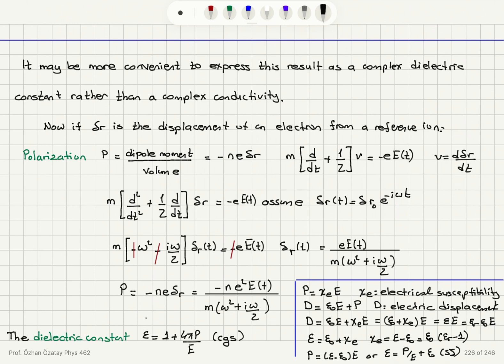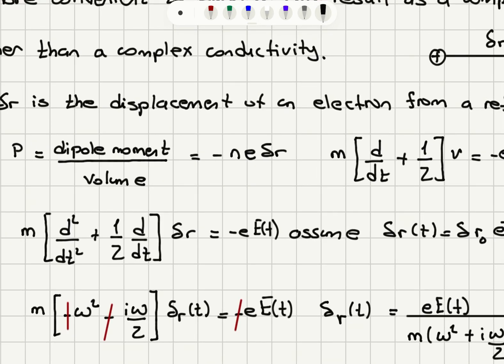Instead of talking about AC conductivity, it may be more convenient to express this result as a complex dielectric constant. This discussion proceeds by thinking about the displacement of an electron from a reference ion. The electron is displaced by a distance delta R from the ion, creating an electric dipole. The polarization is defined as the dipole moment per volume — the charge multiplied by the distance between the two equal and opposite charges divided by the volume — which equals minus the electron concentration times the electron charge times delta R.